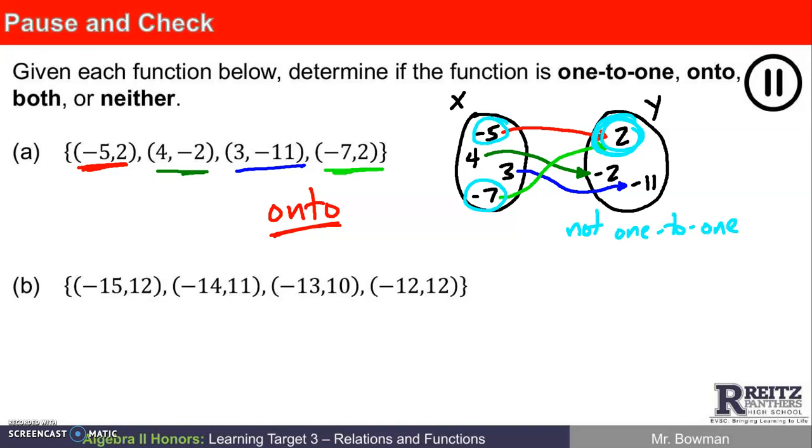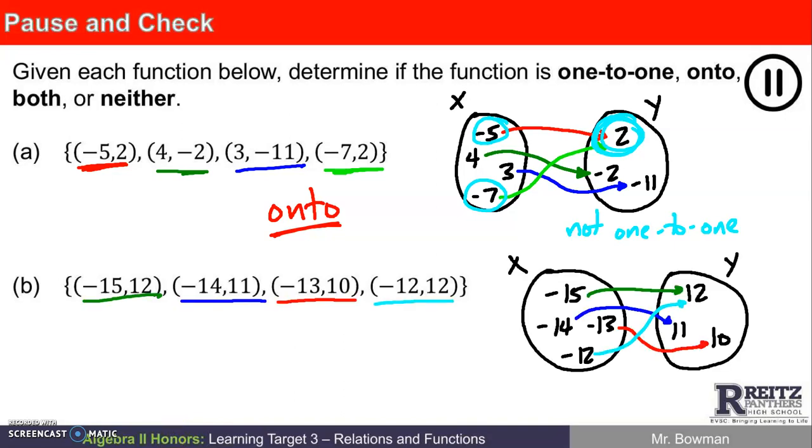I'm going to pause again and maybe you want to do the same if you hadn't done this before. And I'm going to draw the mapping for the second function. Let's see. Let's check and make sure that I've got that drawn correctly. Negative 15 goes with 12. Negative 14 goes with 11. Negative 13 goes with 10. And negative 12 goes with positive 12.